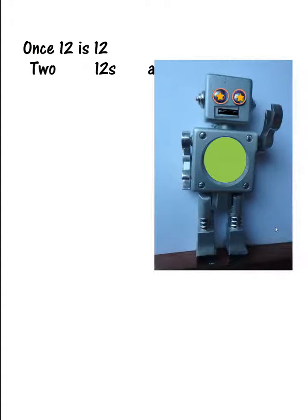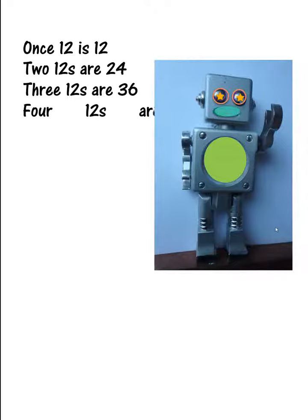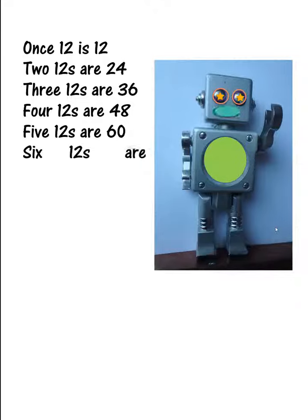Once 12 is 12, 2 12s are 24, 3 12s are 36, 4 12s are 48, 5 12s are 60, 6 12s are 72.